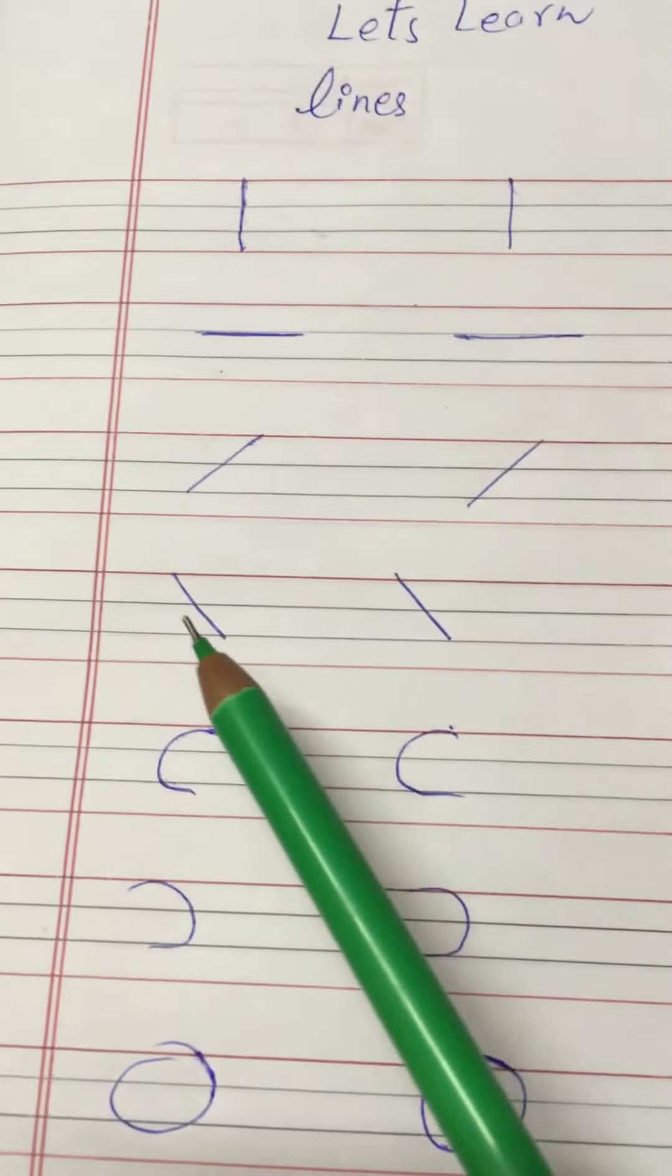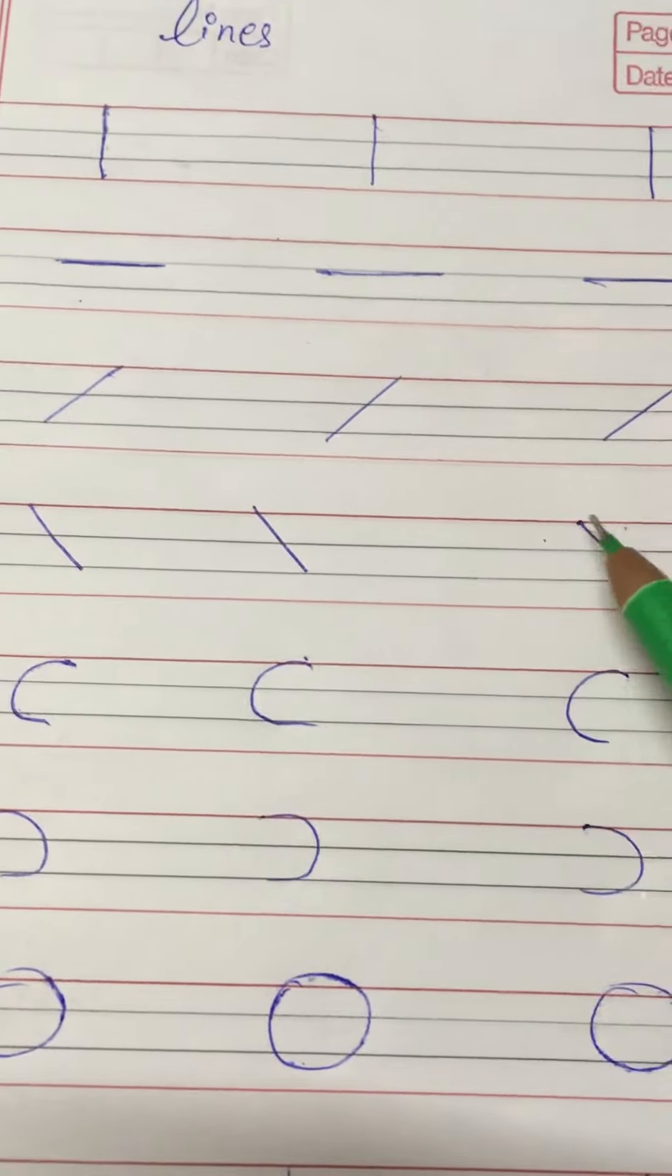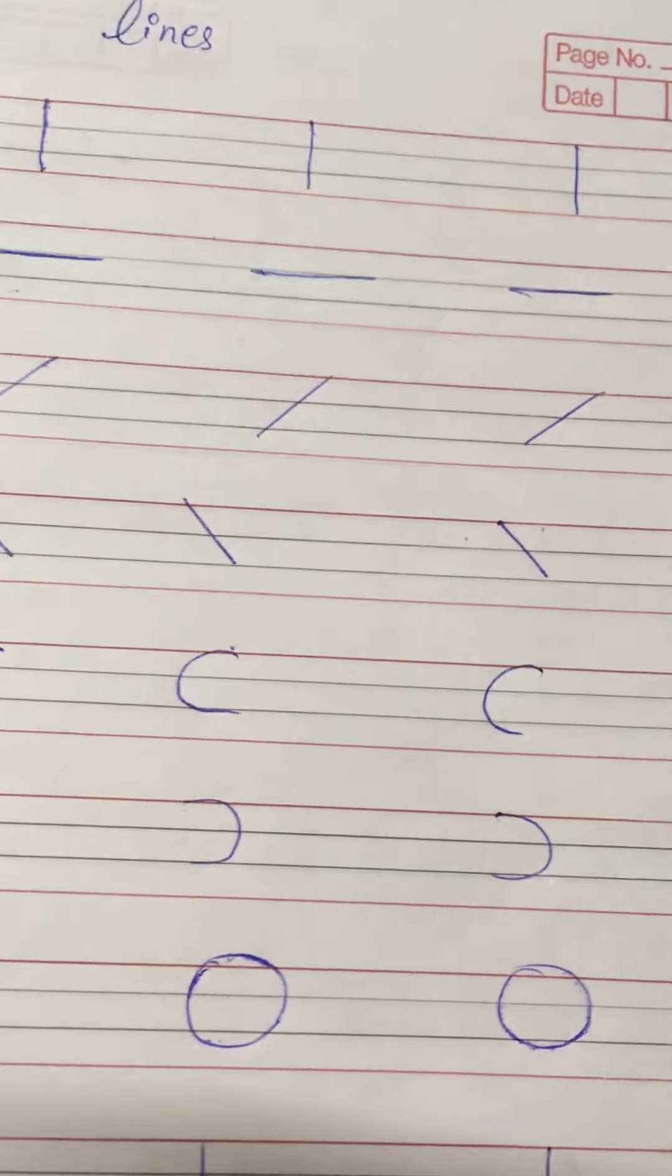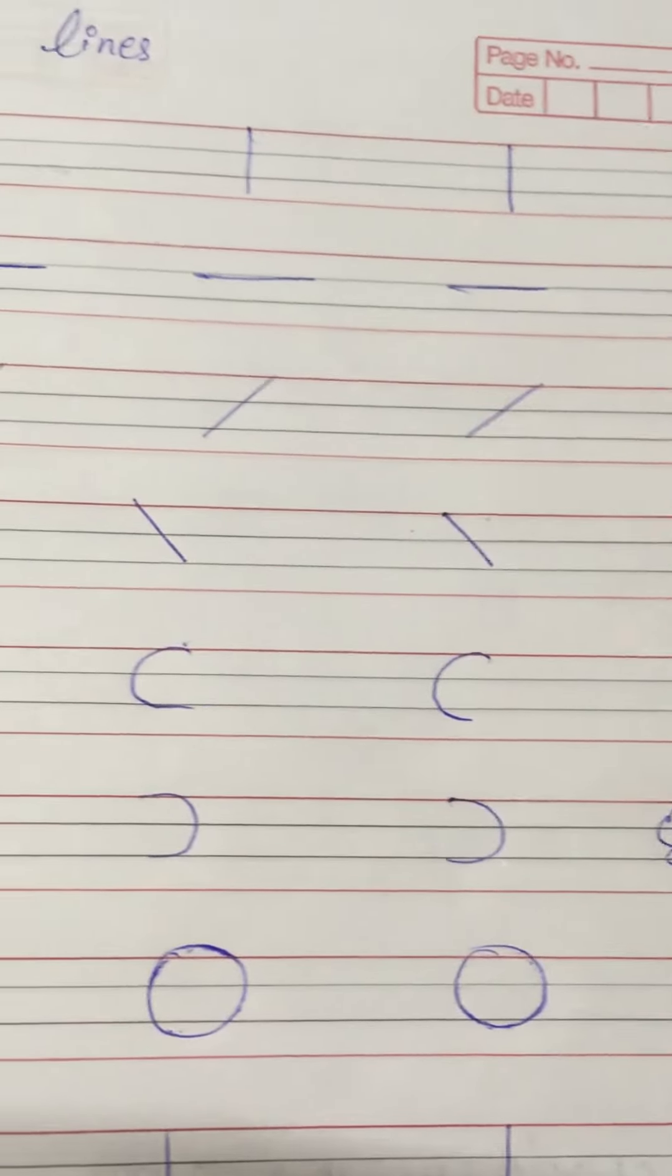Now again slanting line - dousri direction me slanting line. Again we will make the kite.